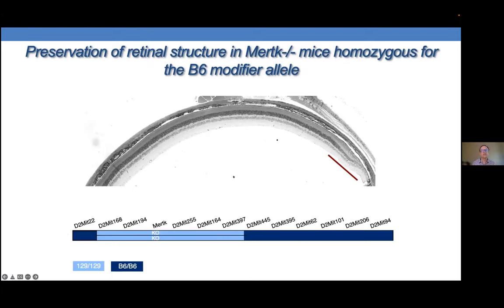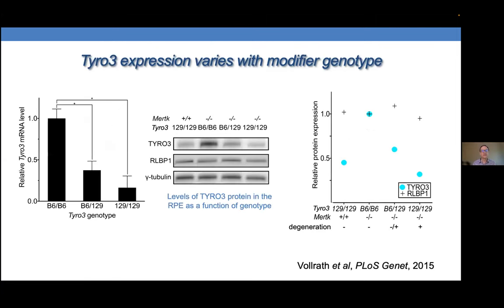In the homozygous state, retinas looked almost completely normal except for in the far periphery where there was some evidence of degeneration — a striking suppression. We set up a cross and mapped the modifier to a two-megabase region containing 55 candidate genes. Within that region, one gene stood out as a pretty obvious candidate: Tyro3, a paralogue of MERTK and another member of the TAM family of receptor tyrosine kinases.